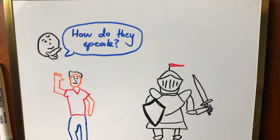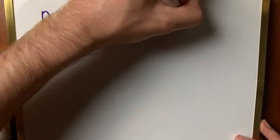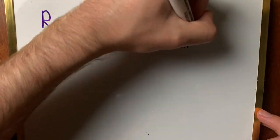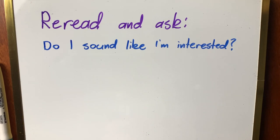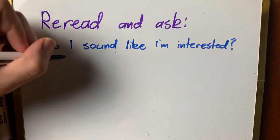Rereading your own writing is one of the most important things you can do to improve your writing. When rereading your work, ask yourself, do I sound like I'm interested? People don't want to read things if they think the author doesn't care.